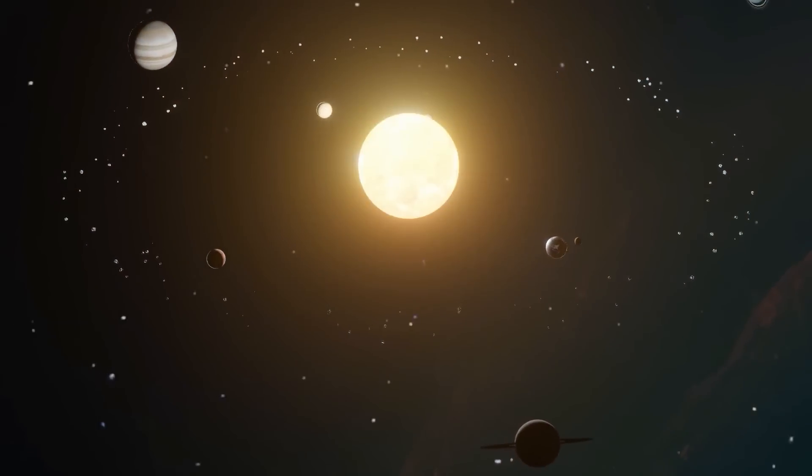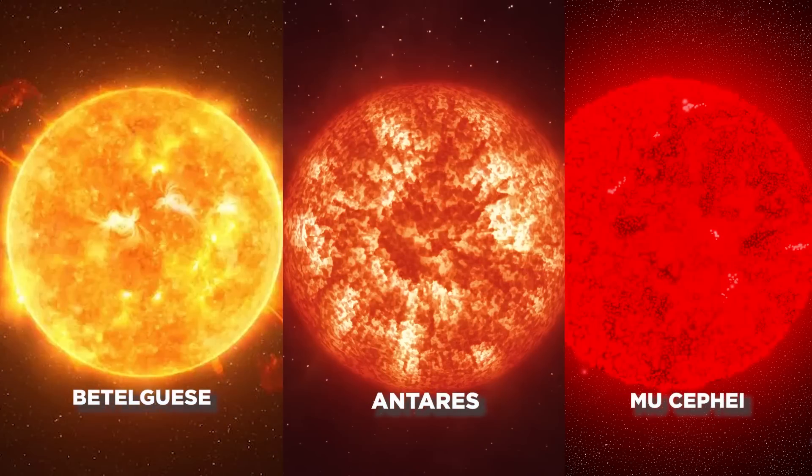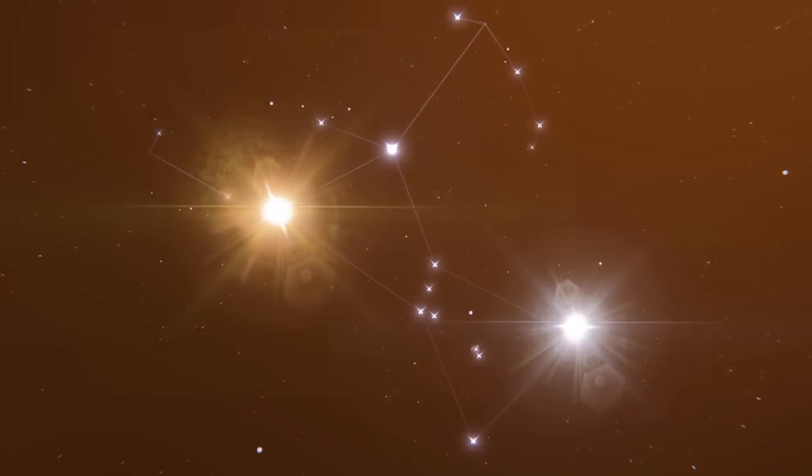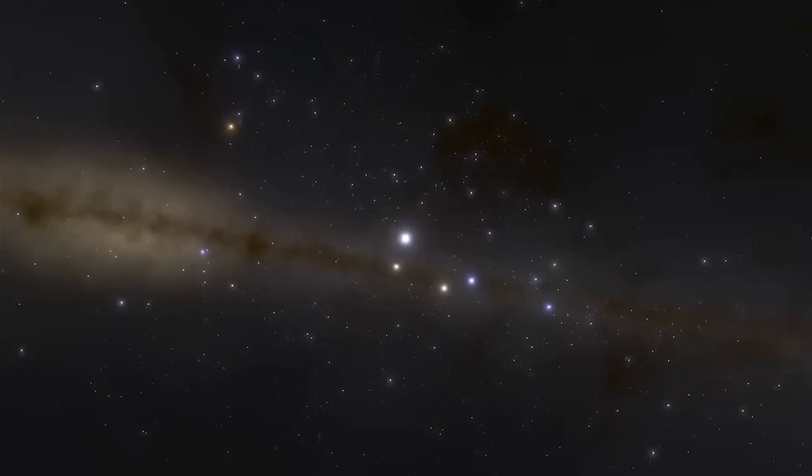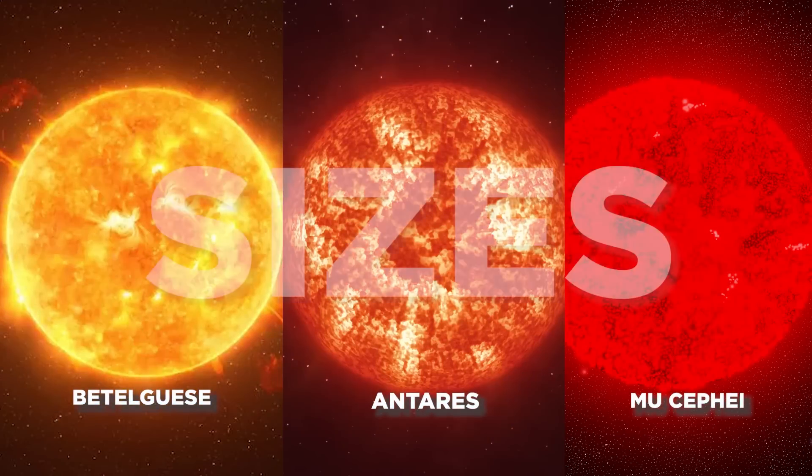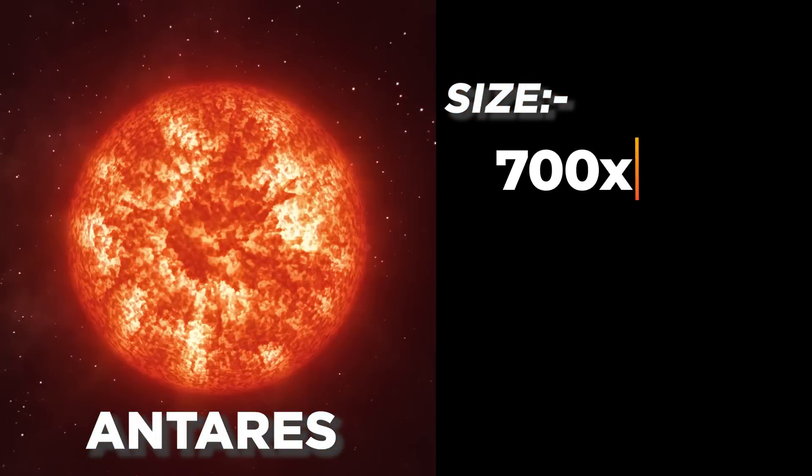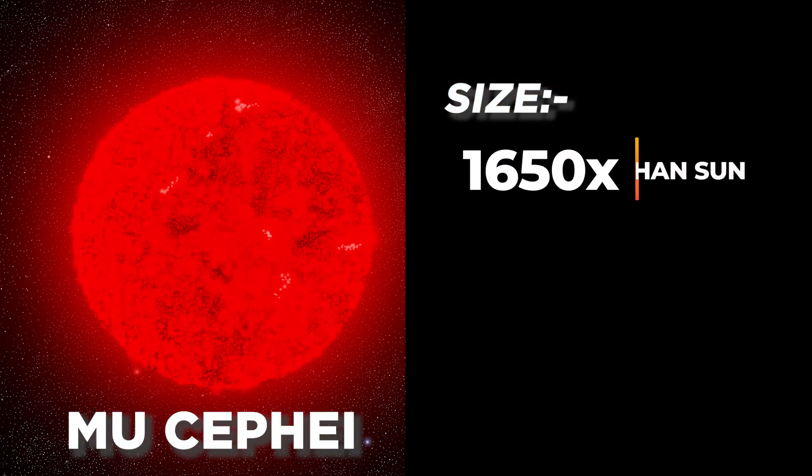We'll use our sun as an example to show the difference because we all know a lot about it. Even though Betelgeuse, Antares and Mucefei are all red supergiant stars, they are not exactly the same. Each has its own things that make it stand out. One big difference between the three stars is how big they are. For instance, Betelgeuse is about 1000 times the size of the sun, and Antares is about 700 times the size of the sun. Another star, Mucefei, is even bigger. Its diameter is about 1650 times that of the sun.